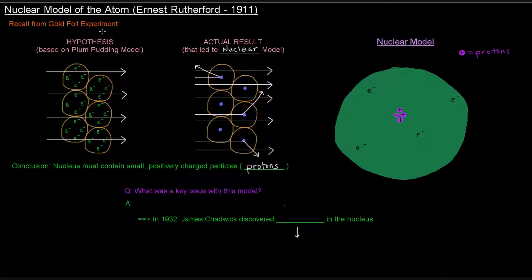Rutherford's gold foil experiment with the hypothesis based on the plum pudding model predicted that the alpha particles should go straight through the atoms of the gold foil.